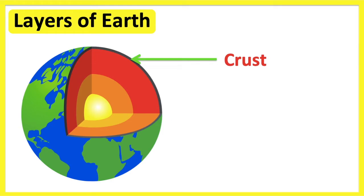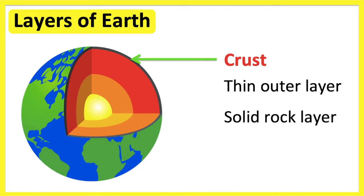The crust is the thin outer layer of the earth. It's the solid rock layer that we live on. The earth's crust is either continental or oceanic.